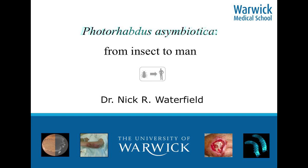What I've been interested in for some time now is how pathogens or insects or invertebrates have been able to evolve over time to become pathogens of mammals and disease of mammals. The model organism I'm going to talk about here is something called Photorhabdus asymbiotica, which I'm sure none of you would have heard of, apart from a few people that have known me in the past.